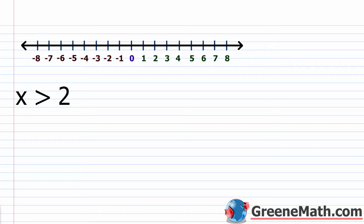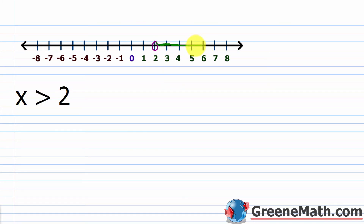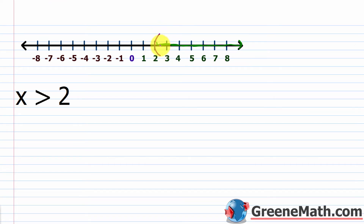What about x is greater than 2? Find 2 on the number line. This is a strict inequality, so 2 is not included. Place a parenthesis facing to the right or an open circle at 2, and shade everything to the right. Both the open circle and the parenthesis mean the same thing — it's just a matter of what your textbook or teacher tells you to use.